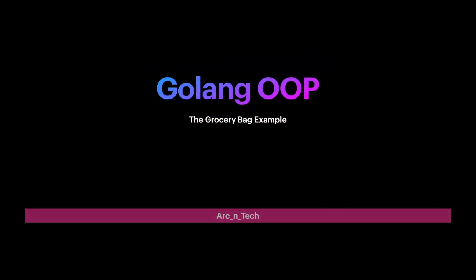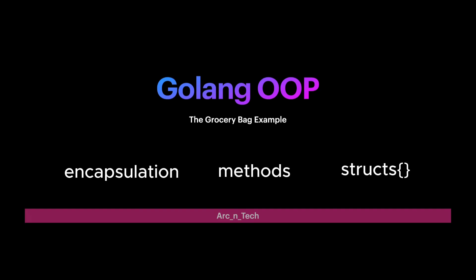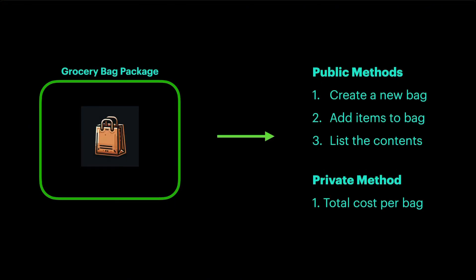GoLang object oriented programming using the grocery bag example. The following example will demonstrate object oriented principles such as encapsulation and methods associated with structs, which are Go's way of implementing object oriented programming. We're going to start with the grocery bag package and we're going to need some methods: three public methods — one to create a new bag, another to add items to a bag, and one to list the contents with cost per item. We'll also have a private method to total the cost per bag.